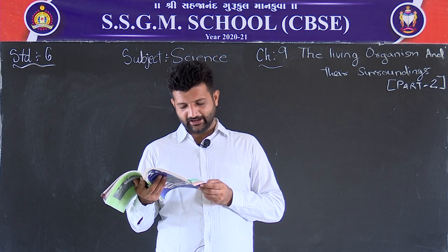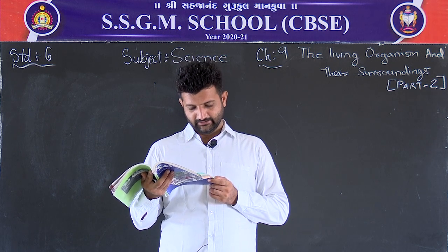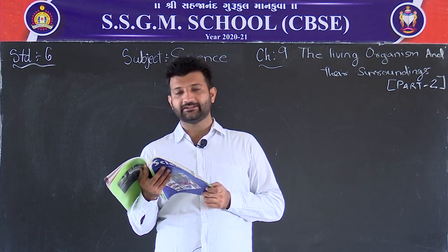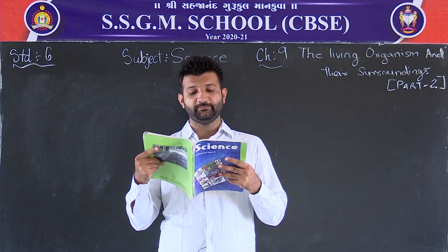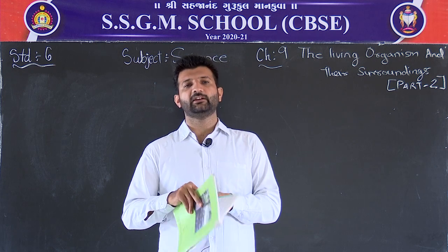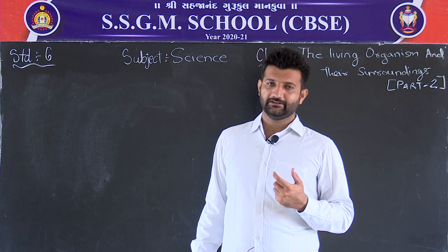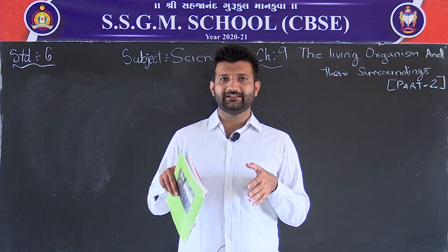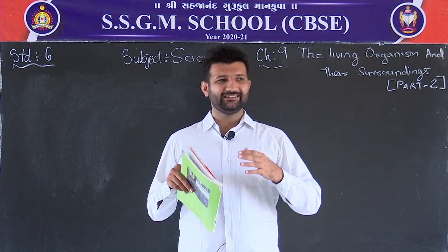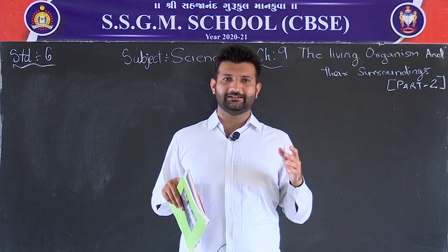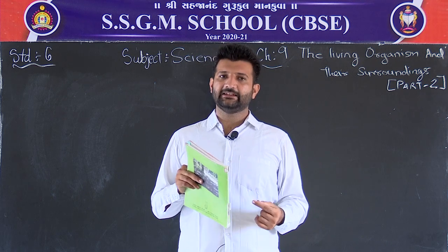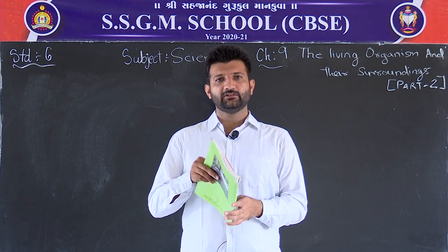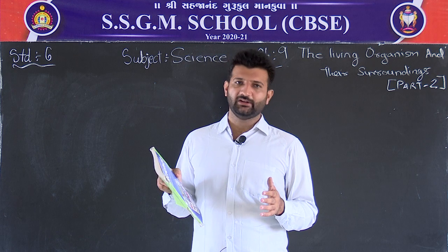Mountain trees are normally cone-shaped and have sloping branches. The leaves of some of these trees are needle-like. This helps rainwater and snow to slide off easily. The shape is like an inverted ice-cream cone so that snow slides off. These cone-shaped trees with needle-like leaves are generally found only in mountain regions and not in plains or deserts.